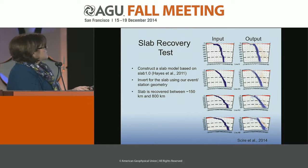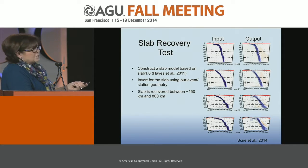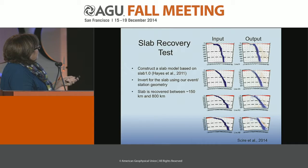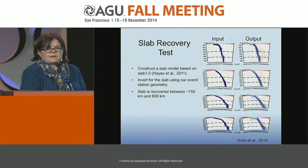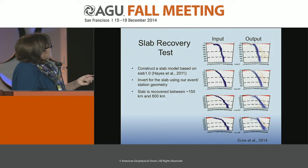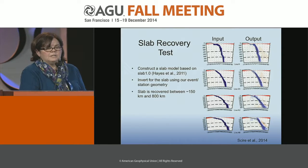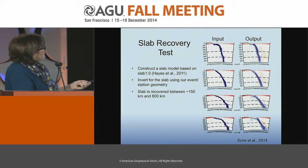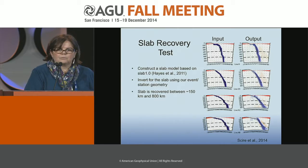Before showing cross-sections, I want to show a slab recovery test to illustrate resolution. We construct a slab model using Gavin Hayes' Slab 1.0 and create a synthetic dataset, then invert it with our event and station geometry. The input and output comparison shows we recover the slab reasonably well. We don't quite recover the starting amplitude — typical for these kinds of tests — but resolution is good down to about 150 kilometers. Above that, and where the slab is flat or horizontal, recovery becomes more variable.